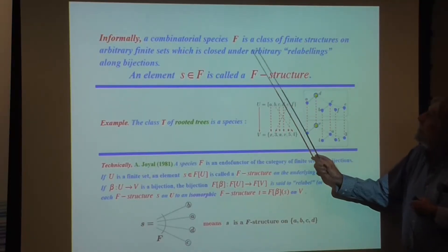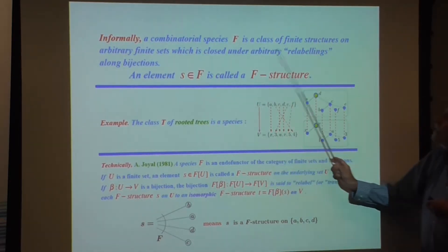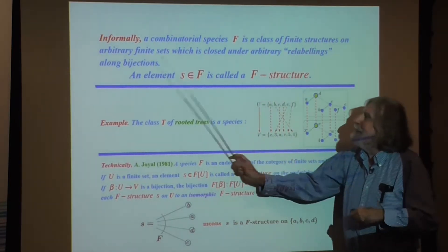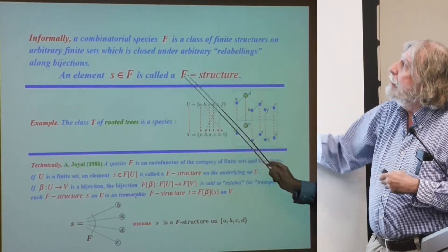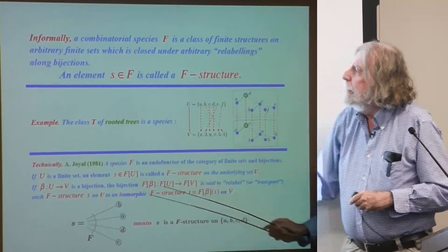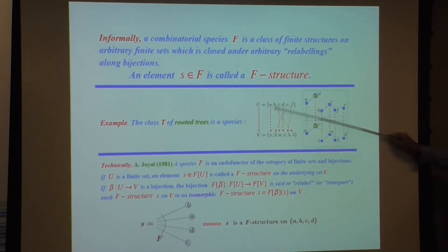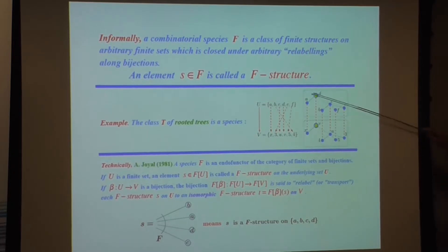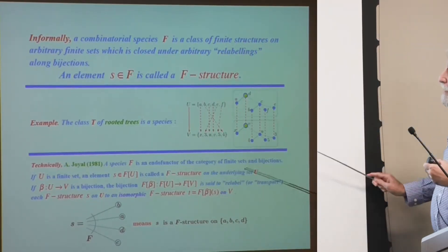A combinatorial species is a class of finite structures on arbitrary finite sets, which is closed under arbitrary relabelings along bijections. Any element of class F is called an F-structure. The class T of rooted trees is a species, because if you take any rooted tree on a set and a bijection between that set and another, you can transport and relabel along the bijection. Joyal introduced the concept of species as an endofunctor of the category of finite sets and bijections.